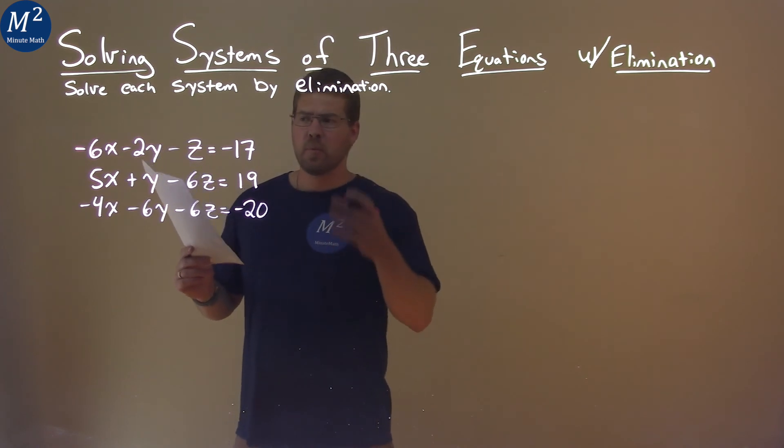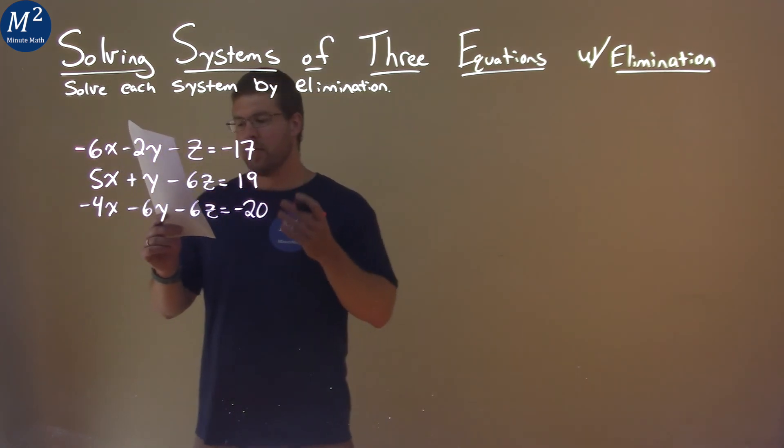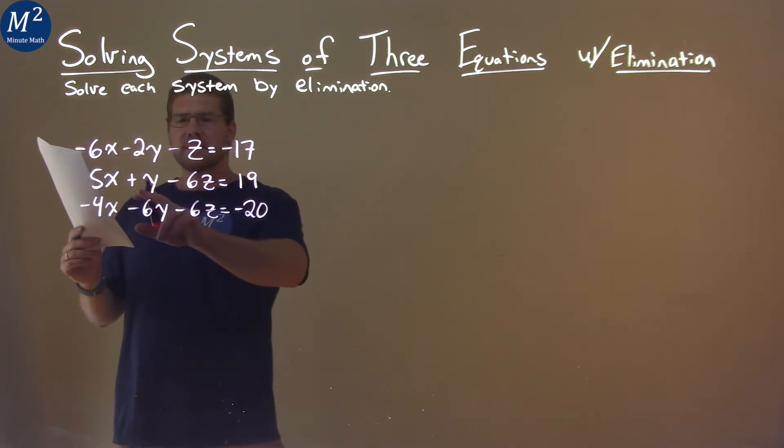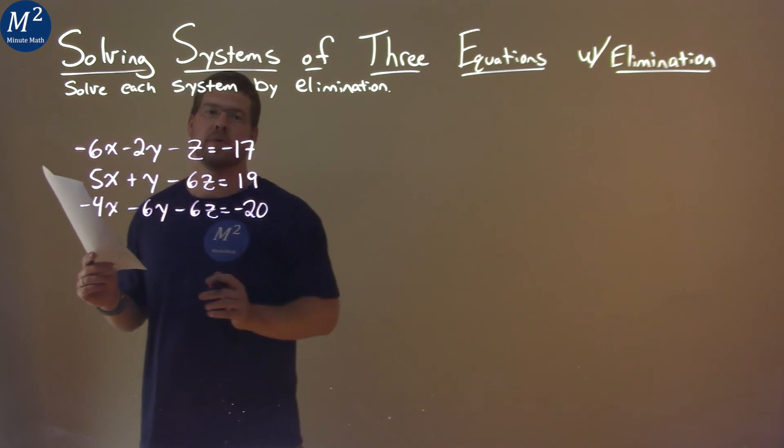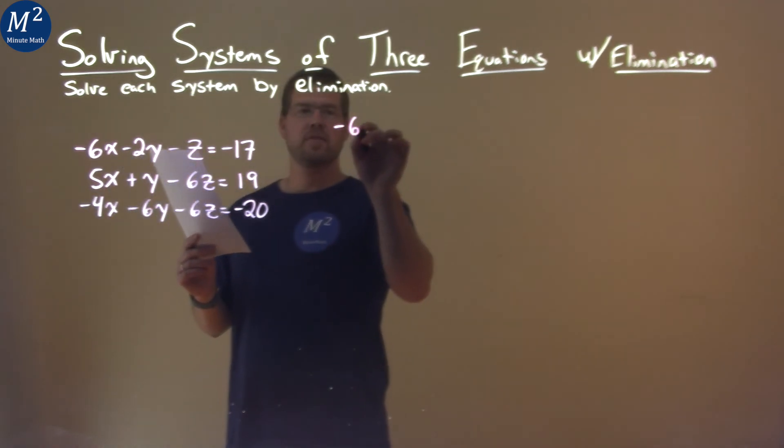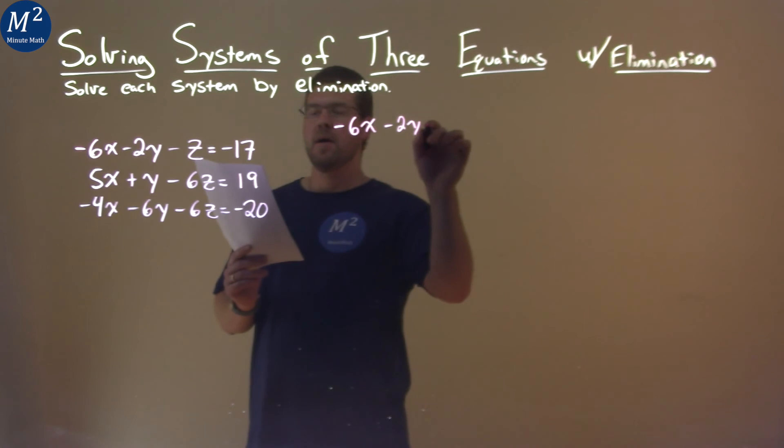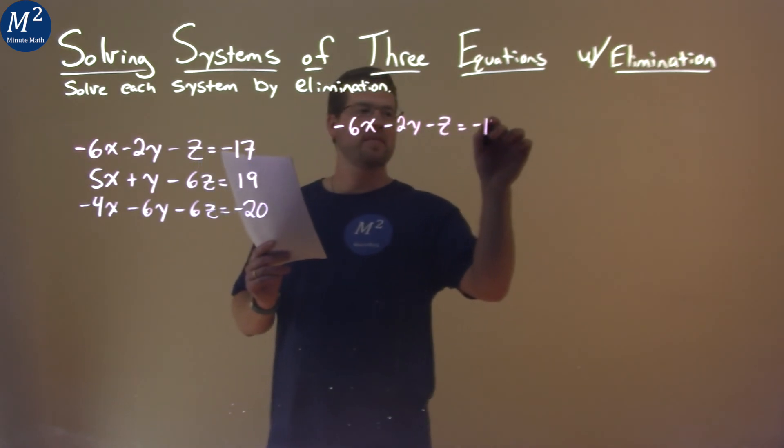Well, what can we do? We want to find a way we can cancel out a variable. If I take the second equation and multiply it by 2, we'll have 2y here, and then negative 2y in the first equation, and 2y here will cancel. So let's rewrite the first equation: negative 6x minus 2y minus z equals negative 17.